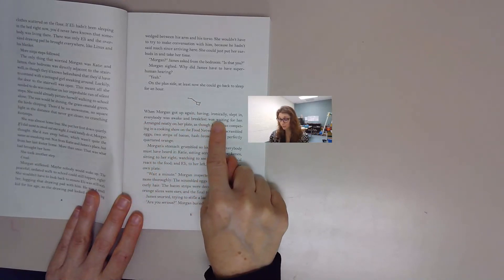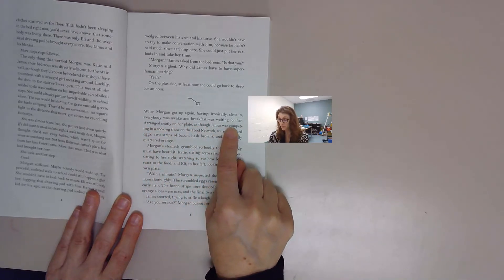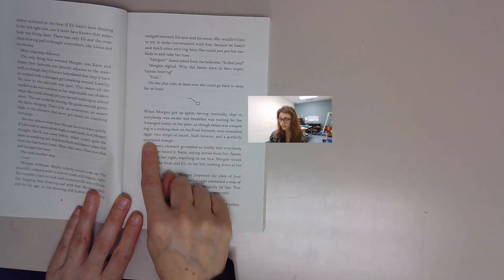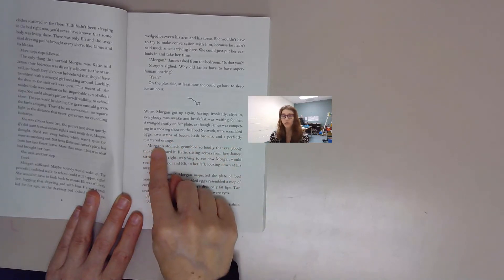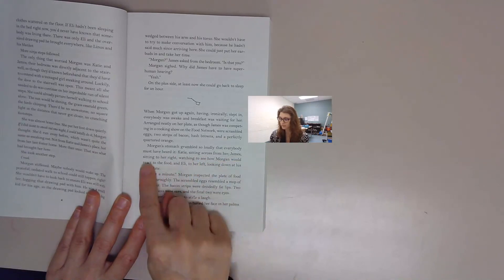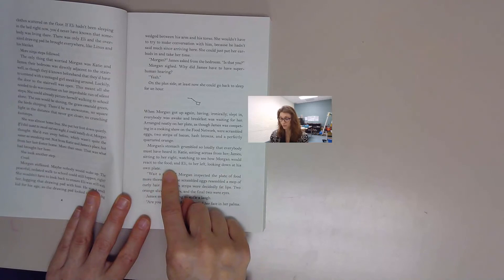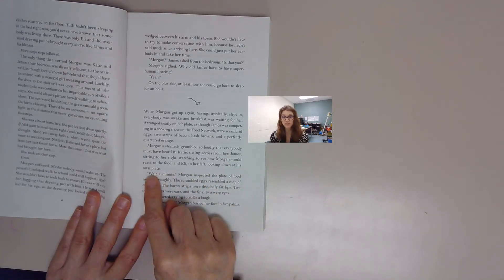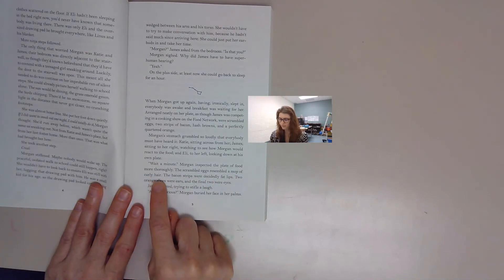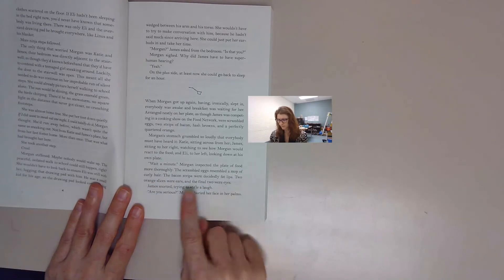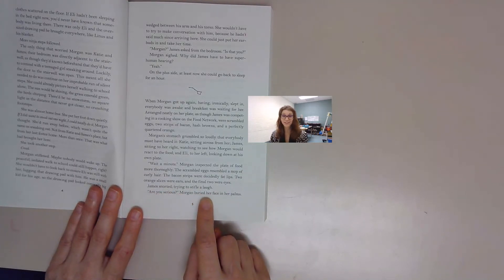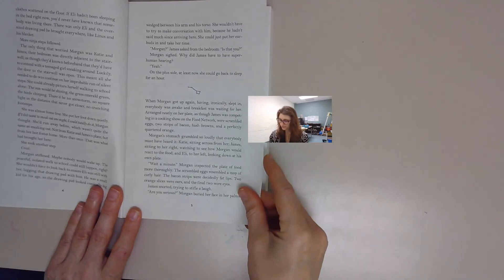When Morgan got up again, having ironically slept in, everybody was awake and breakfast was waiting for her. Arranged neatly on her plate, as though James was competing in a cooking show on the Food Network, were scrambled eggs, two strips of bacon, hash browns, and a perfectly quartered orange. Morgan's stomach grumbled so loudly that everybody must have heard it. Katie sitting across from her, James sitting to her right watching to see how Morgan would react to the food, and Eli to her left looking down at his own plate. Wait a minute. Morgan inspected the plate of food more thoroughly. The scrambled eggs resembled a mop of curly hair. The bacon strips were decidedly fat lips. Two orange slices were ears and the final two were eyes. James snorted, trying to stifle a laugh. Are you serious? Morgan buried her face in her palms.